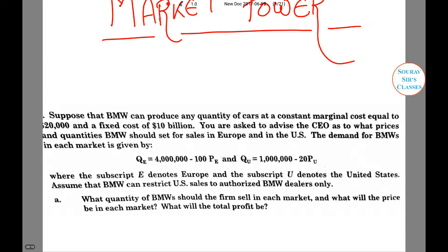We are given a case of BMW where it has a constant marginal cost equal to $20,000 and a fixed cost of $10 billion. We are asked to determine the prices and advise the CEO about the quantities BMW should sell for Europe and US. We are given the demand of each market — this is for Europe and this is for US.